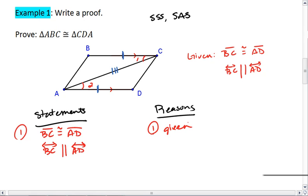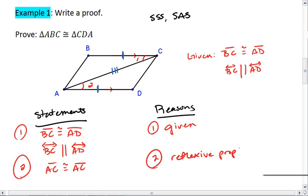When sketching out my proof, I realized that AC is congruent to AC, giving me, or by a reflexive property, which gives me my second side. So in my first statement I got one side, and my second statement I got another side.